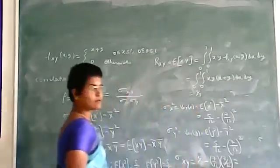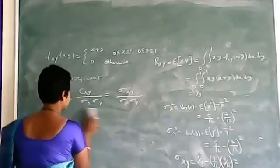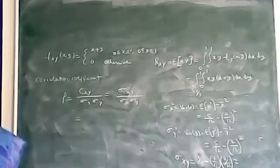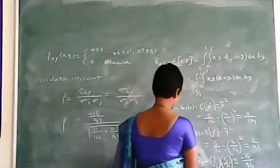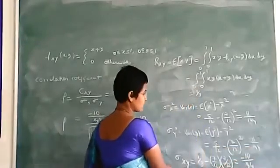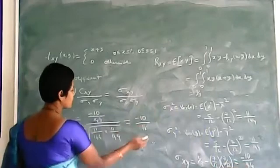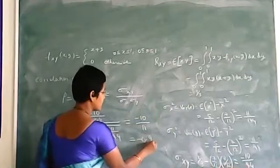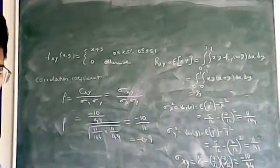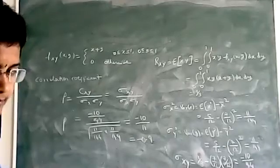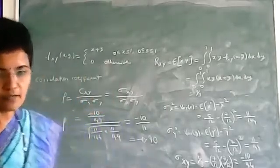E[x²] is 1 by 3, so sigma_x squared is 1 by 3 minus (7/12) squared. Now we find sigma_xy: sigma_xy equals E[xy] minus x̄·ȳ, which is 1/3 minus (7/12) times (7/12). We got sigma_xy equal to minus 1/144. Substituting all values, we get rho equal to minus 10 by 11, which is approximately minus 0.9.